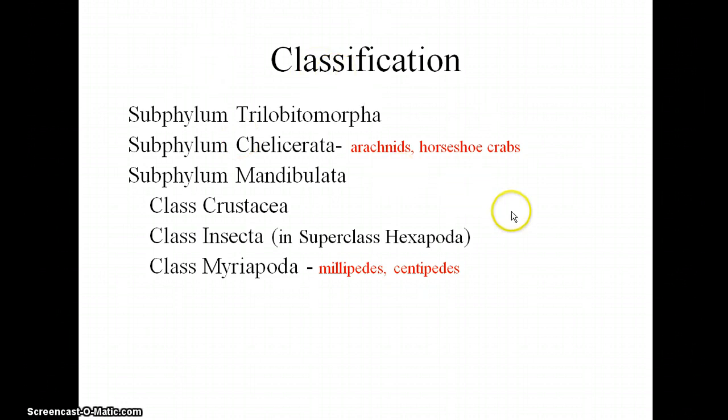If you think of the arthropods in four major groups: the chelicerates, the crustaceans, the insects, and the myriapods, you can organize the arthropods in your mind a little bit more.